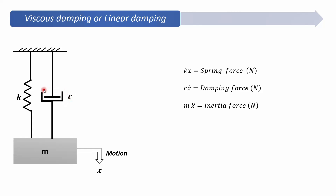The dashpot is similar to the shock absorber in a motorcycle — that is nothing but a viscous damping system. The spring k will also offer a restoring force. So the restoring force is offered by the spring as well as by the dashpot. As we know, kx is the spring force and the restoring force, cx-dot is the damping force, and mx-double-dot is the inertia force.